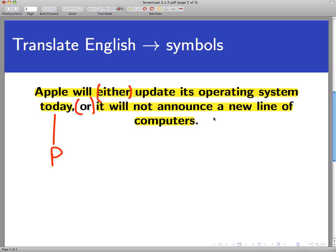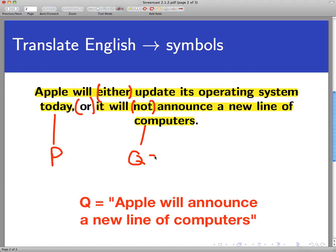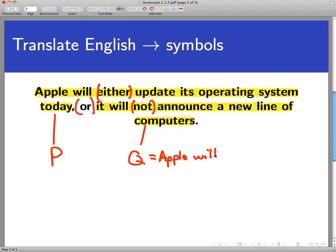Now the second statement, it would be tempting to just take this whole thing and call it Q. But I think we want to make this statement as simple as possible. I'm going to take the word not and factor that out. The word not indicates a negation of something. Let's make the second sentence as simple as possible. Let's make that sentence Apple will announce a new line of computers. Let's call that statement Q.